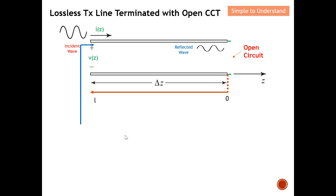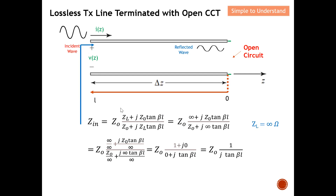Next, what I want to calculate is the input impedance. This is the general equation for input impedance that I derived earlier — it gives the impedance at any point on the line. For the specific case of input impedance Z_in, I apply this equation. Because this is an open circuit, I declared that Z_L equals infinity. So in this equation, Z_L is replaced with infinity, which is shown in the next equation.